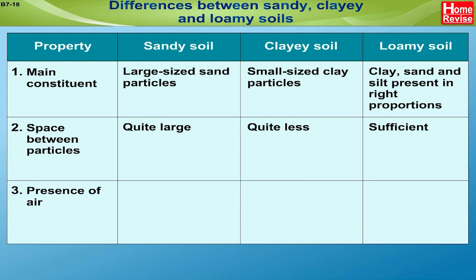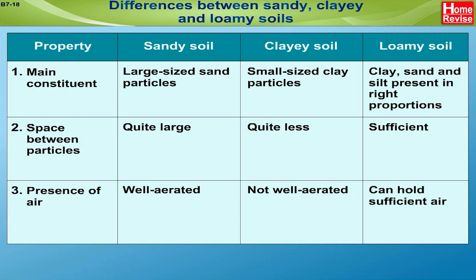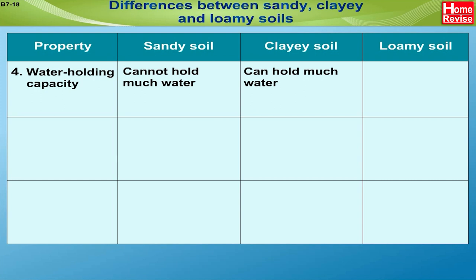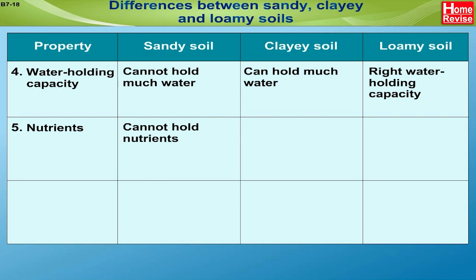3. Presence of air: Sandy soil is well aerated; Clay soil is not well aerated; Loamy soil can hold sufficient air. 4. Water-holding capacity: Sandy soil cannot hold much water; Clay soil can hold much water; Loamy soil has the right water-holding capacity. 5. Nutrients: Sandy soil cannot hold nutrients; Clay soil can hold nutrients; Loamy soil can also hold nutrients.